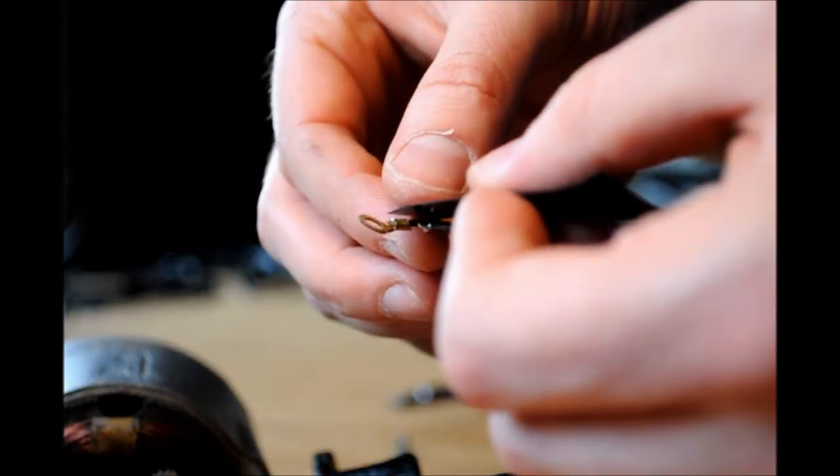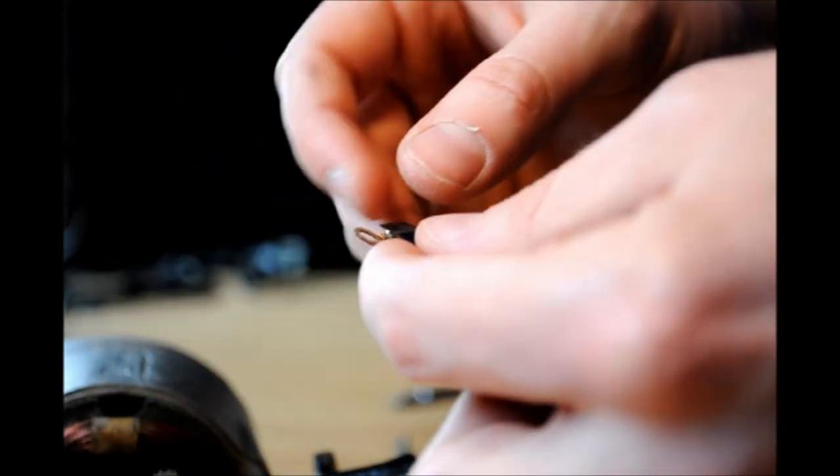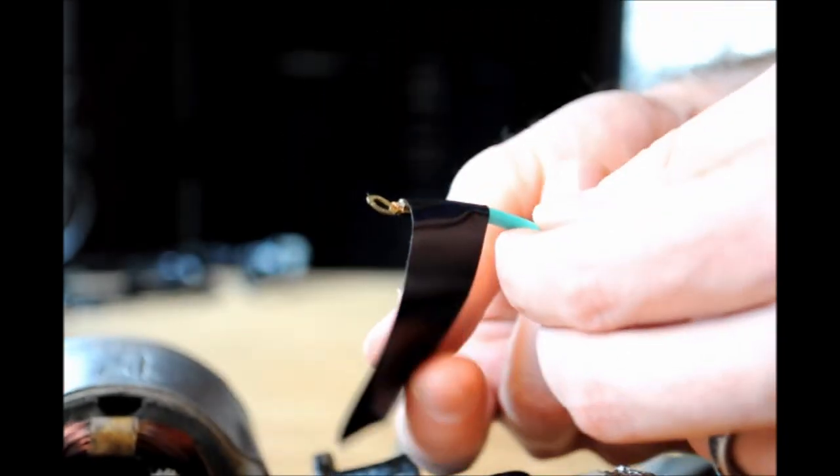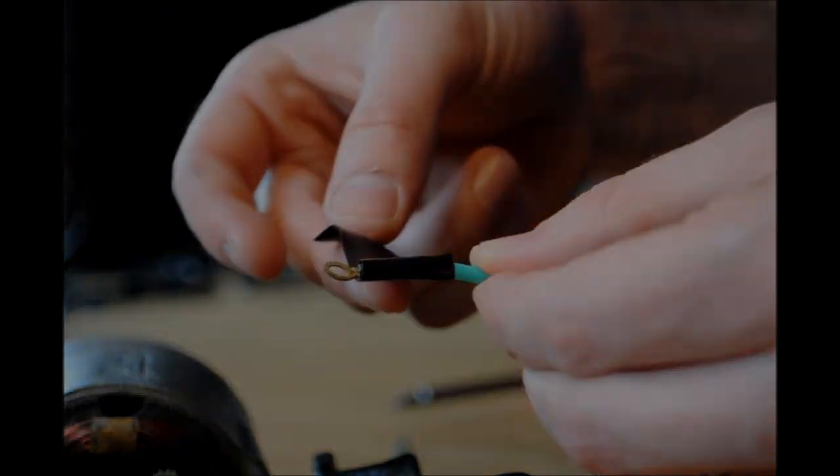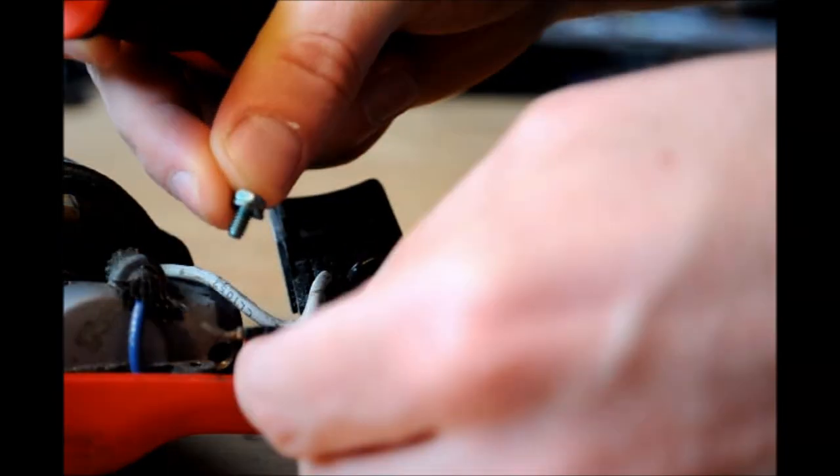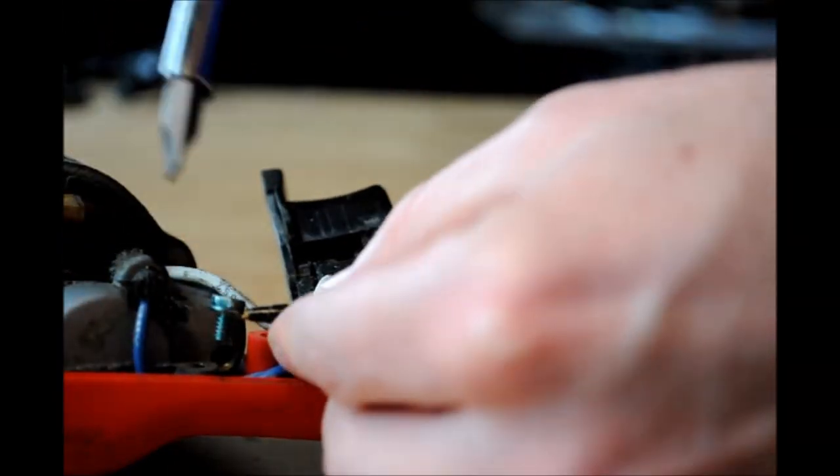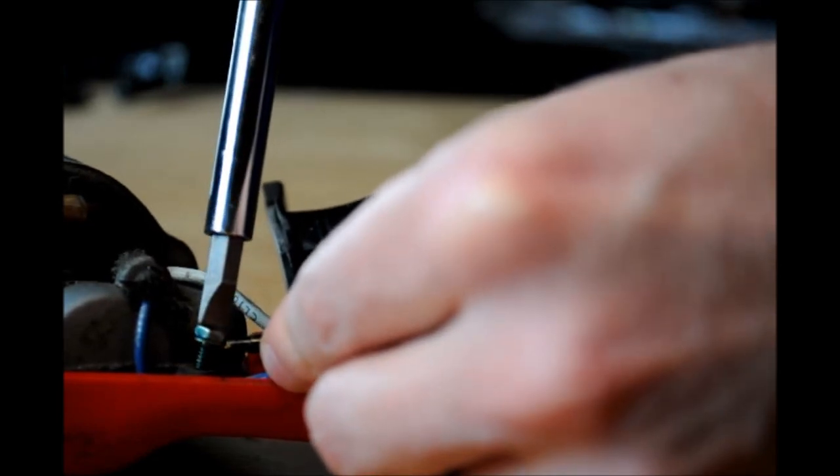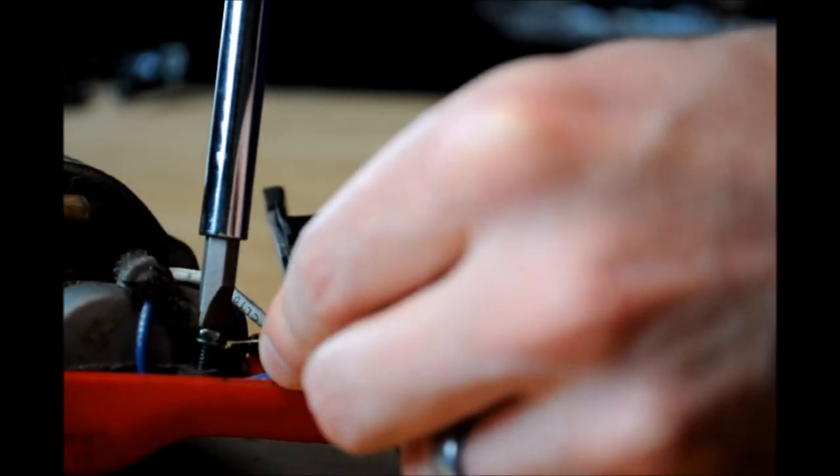Cover the exposed solder spots by wrapping them in electrical tape. If your ground wire was attached by screw, attach the new wire with the same screw.